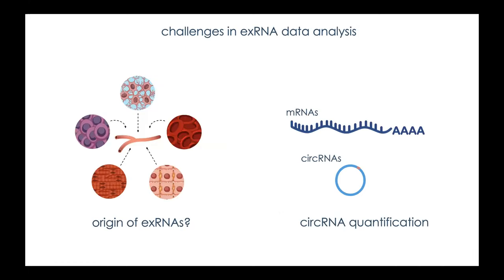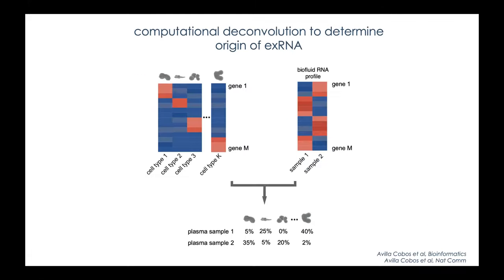The two things I want to touch upon today: first, a question many of us are asking — what is the origin of these extracellular RNAs that we are detecting across these different fluids? This was also addressed in part by Rob Kitchen in the first talk. I will mainly be talking about challenges in that field, and then briefly touch on circular RNA quantification.